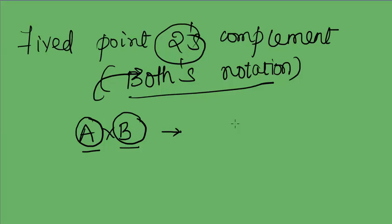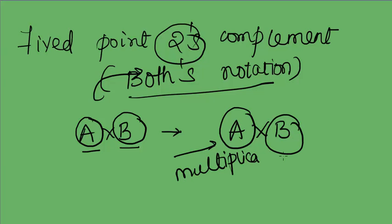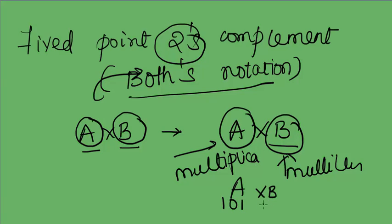In Booth's notation, for an a × b multiplication, a is called the multiplicand and b is called the multiplier. The number of times we multiply depends on the number of bits in b (the multiplier). For example, if a is 1,0,1 and b is 0,0,1, the count value equals the number of bits in the multiplier — here, 3 — and we perform the operation until the count reaches 0.